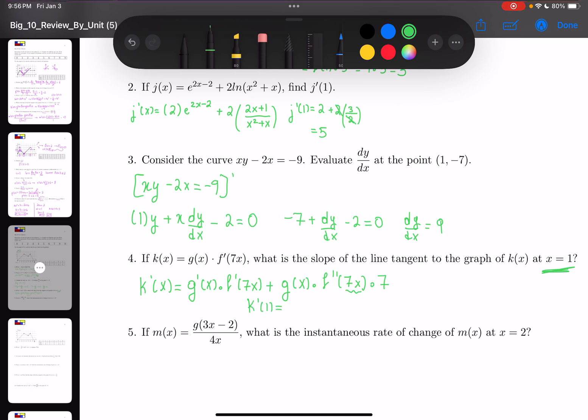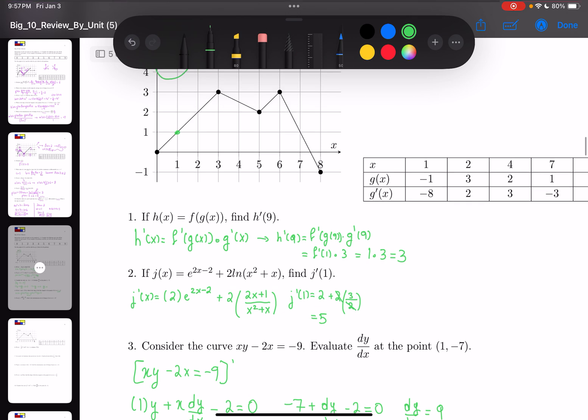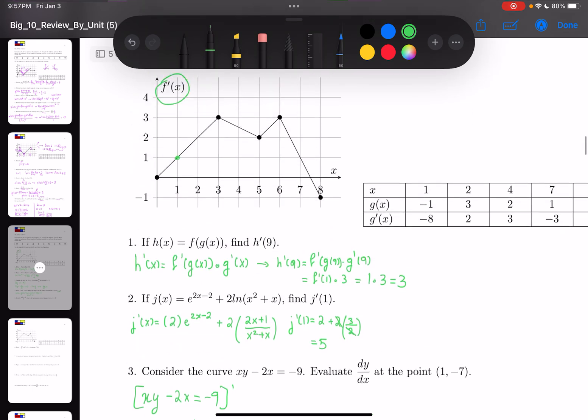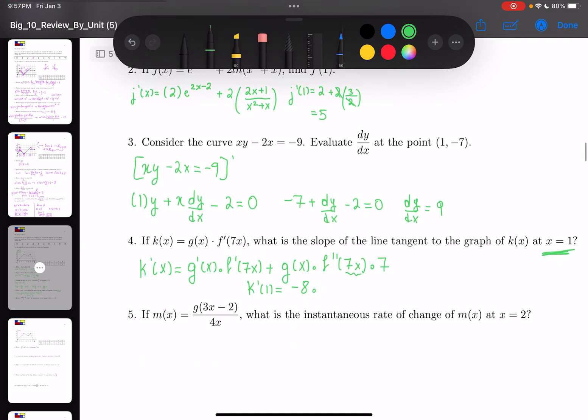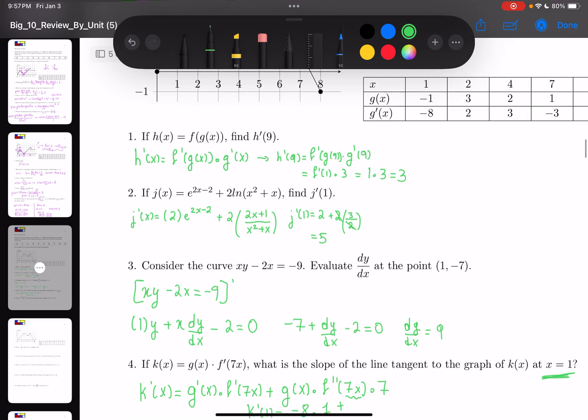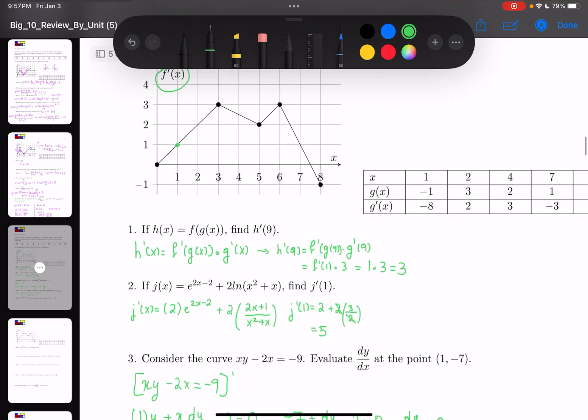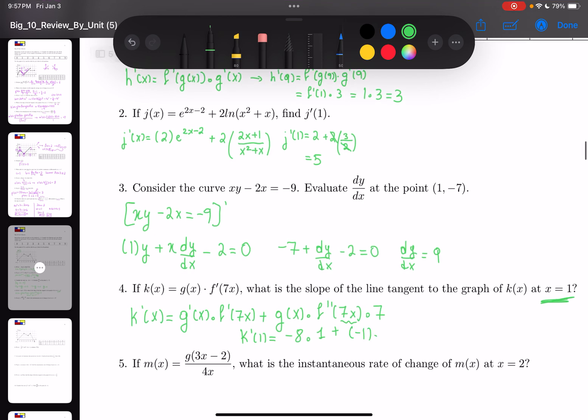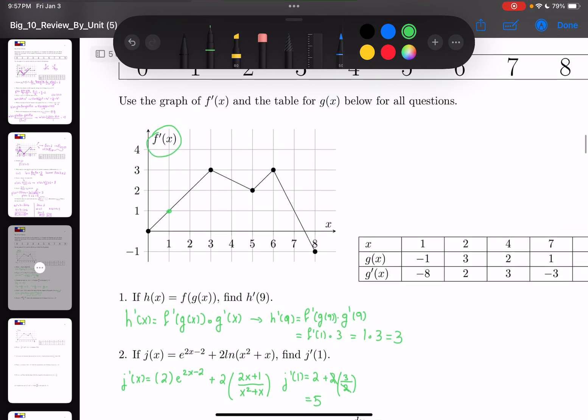So k'(1) is g'(1), which is -8, times f'(7), which is 1, plus g(1), which is -1, times f''(7) times 7.